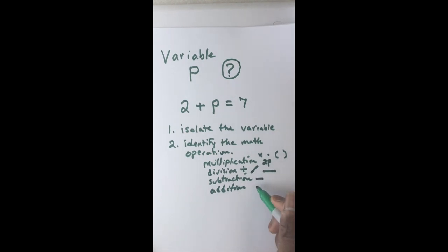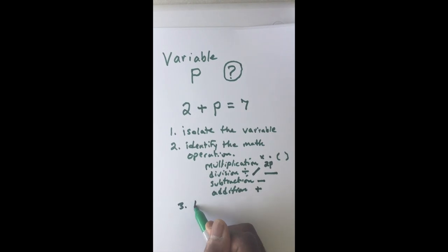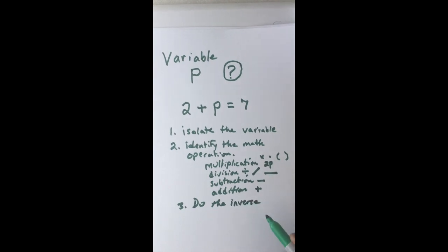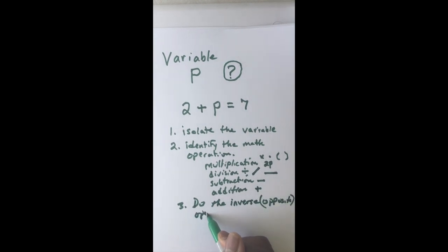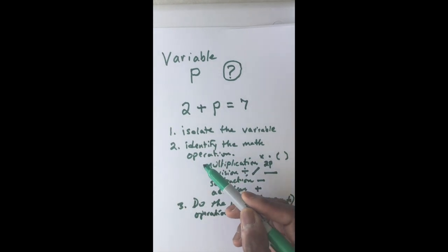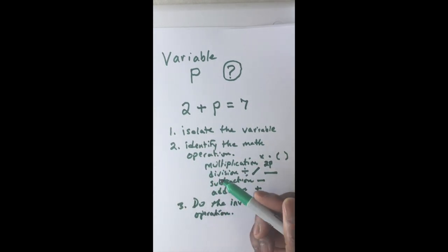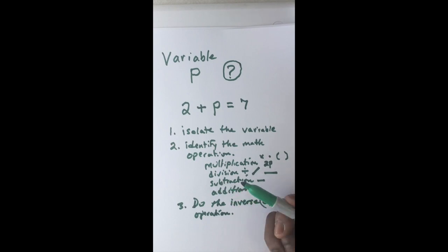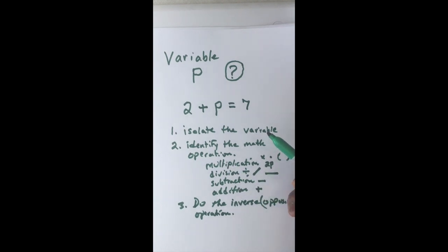Subtraction is the minus sign, and addition is the plus sign. Remember, we want to do the inverse — the inverse, or opposite, operation. The inverse of multiplication is division. The inverse of subtraction is addition. The inverse of addition is subtraction. The inverse of division is multiplication. So these are the steps: isolate the variable, identify the math operation, and do the opposite.